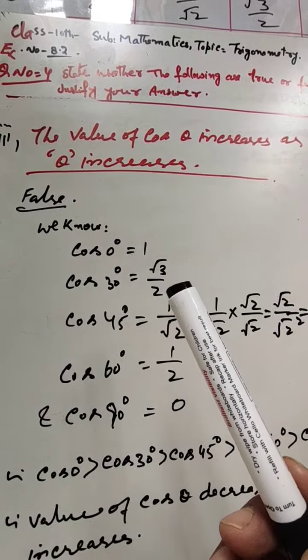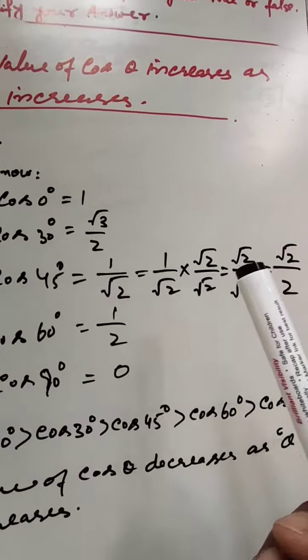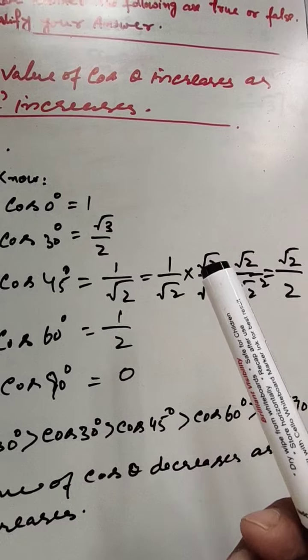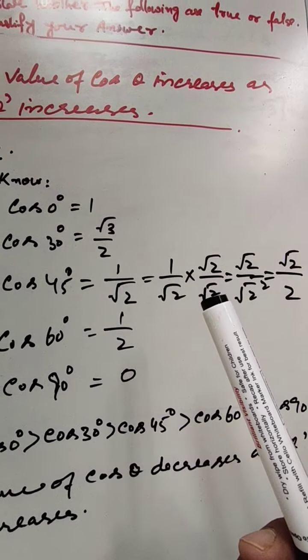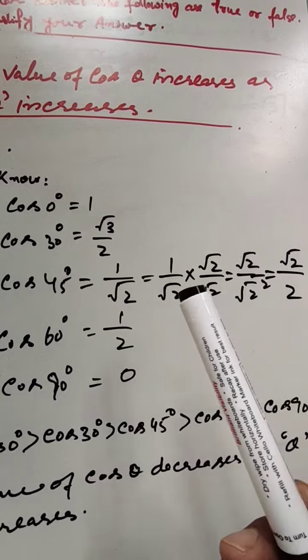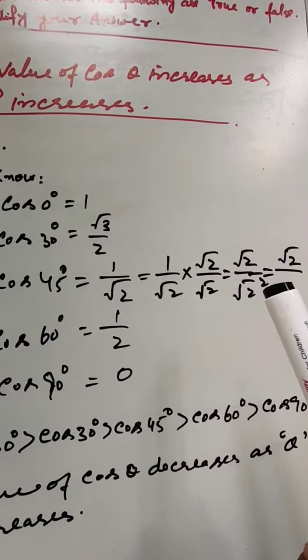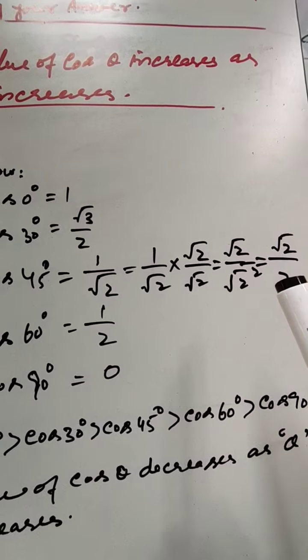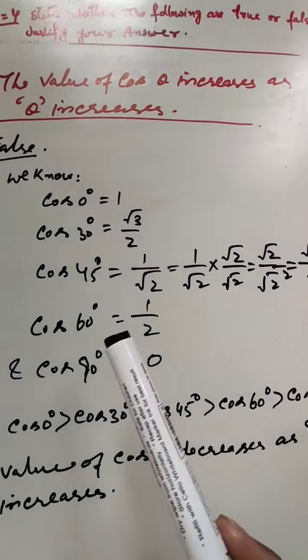cos 30° = √3/2, cos 45° = 1/√2, which equals if we multiply both numerator and denominator by √2, we get √2 × 1 = √2 and √2 × √2 = 2, so √2/2.